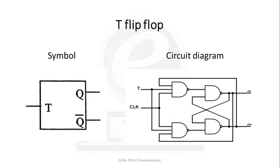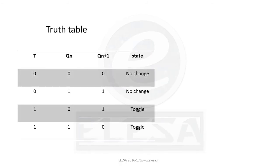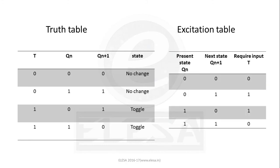The circuit diagram of the T flip-flop is realized using NAND gates with clock and T as inputs and their respective outputs. When T is high, the flip-flop toggles — it changes its state from 0 to 1 and 1 to 0. When T is low, the flip-flop remains in whatever state it was before. With reference to the truth table, when T equals 0, no change takes place and Q(n+1) is the same as Q(n). When T equals 1, the flip-flop toggles, changing its state from 0 to 1 and 1 to 0.